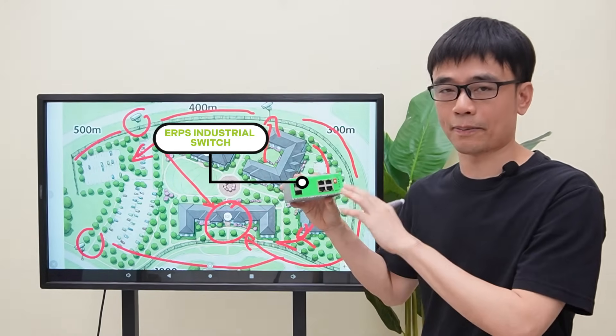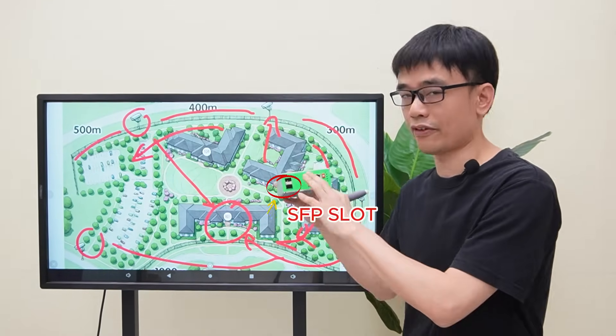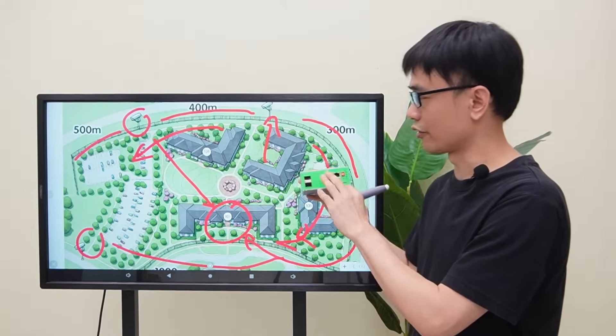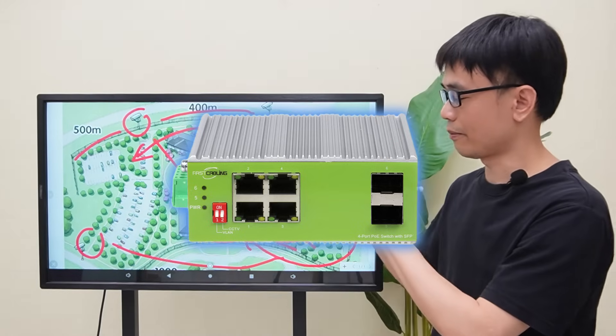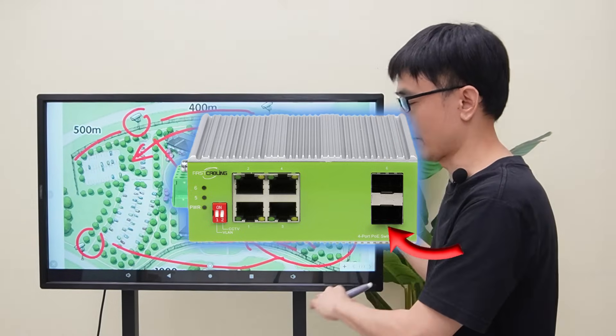This is a switch with eRPS support. It has two SFP slots. The SFP slot on the top works with the fiber optic cable from the left, and the SFP slot on the bottom works with the fiber optic cable from the right.